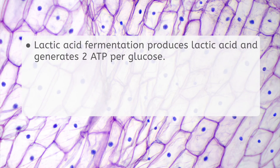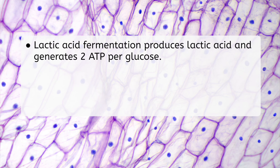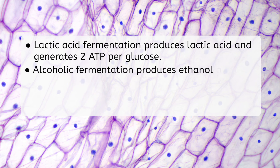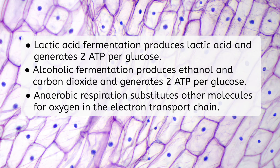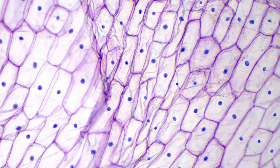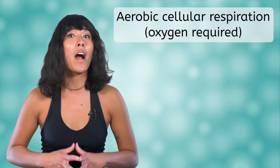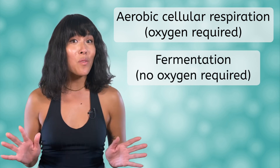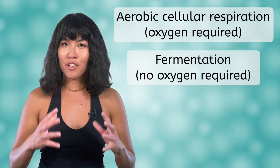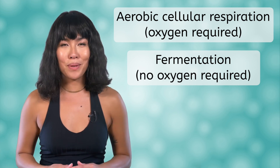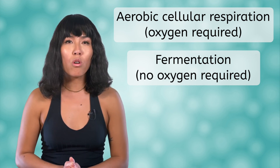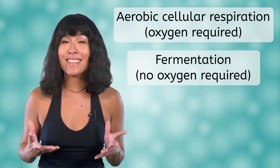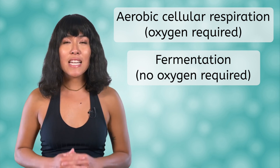We now know that lactic acid fermentation produces lactic acid and generates 2 ATP per glucose. Alcoholic fermentation produces ethanol and carbon dioxide and generates 2 ATP per glucose. And anaerobic respiration substitutes other molecules for oxygen in the electron transport chain. We've now learned about aerobic cellular respiration, which requires oxygen, and fermentation, which does not require oxygen. Both these processes allow the potential energy in fuel molecules to be converted to usable ATP. They are part of the larger set of reactions that make up metabolism. Next time, we'll learn more about the many chemical reactions which work together to keep living things alive. Until then, remember, biology is more than just science. It's the way of life.